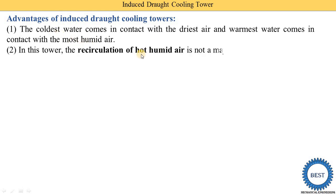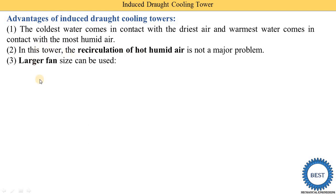In this tower, the recirculation of hot, humid air is not a major problem. In a forced draft, there is a possibility that hot humid exhaust air re-enters through the fan, but here this problem is eliminated because the fan is located at the top of the tower. Also, larger fan sizes can be used — in a forced draft, fan size is limited to about 4 meters, but in an induced draft, larger sizes are possible.